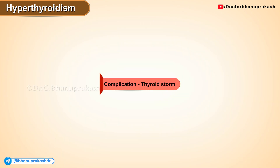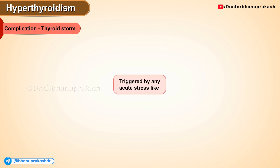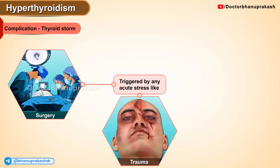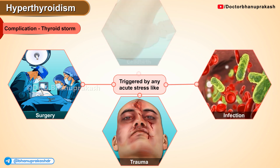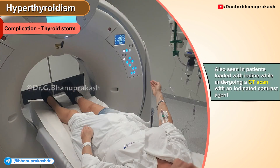A life-threatening complication of underlying hyperthyroid status is thyroid storm. Thyroid storm can be triggered by any acute stress like surgery, trauma, infection, or childbirth. It can also be seen in patients loaded with iodine while undergoing a CT scan with an iodinated contrast agent.